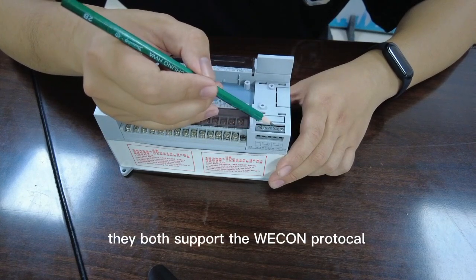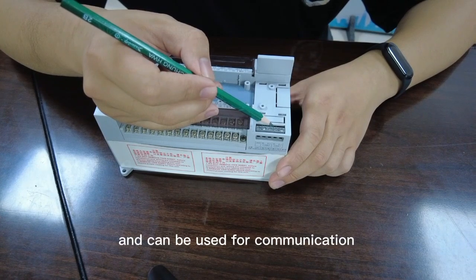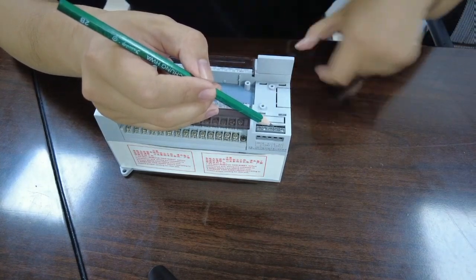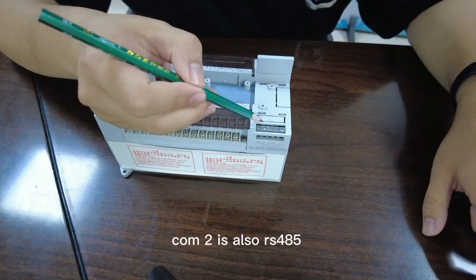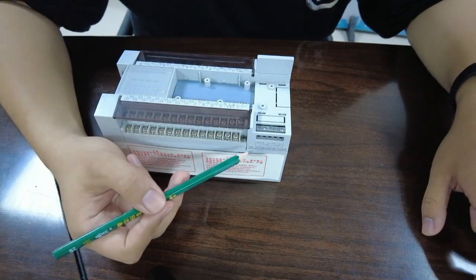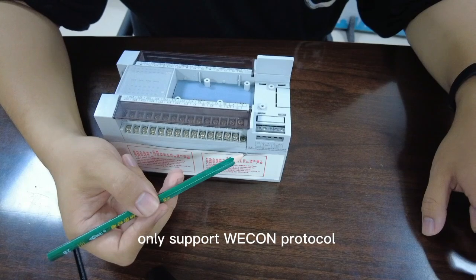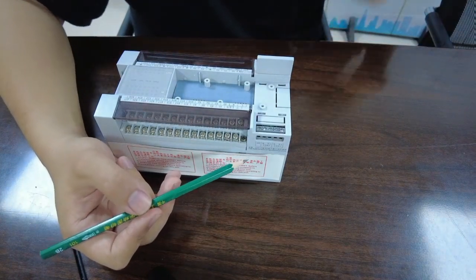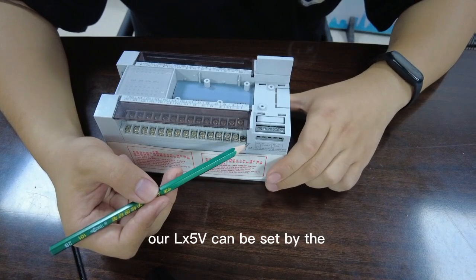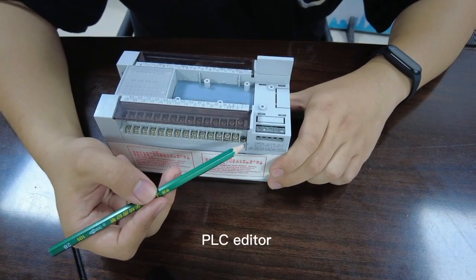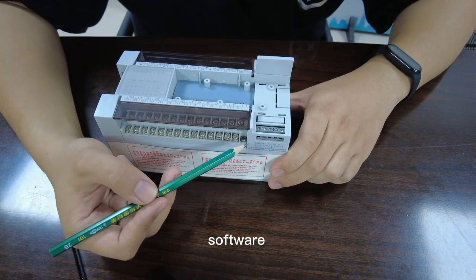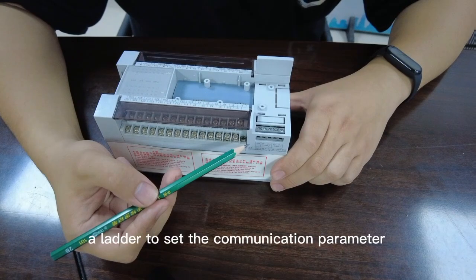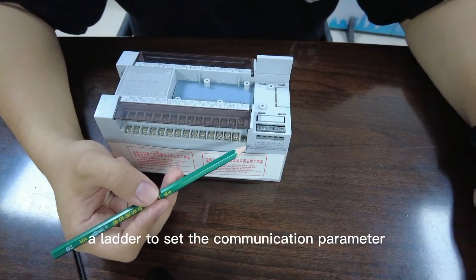They both support the Wacom protocol and can be used for communication with Wacom HMI or WBOX. COM2 is also RS485, but it not only supports Wacom protocol, it also supports Modbus protocol. LX5V can be set by the PLC editor software, but in LX5V you need to program a letter to set the communication parameter.